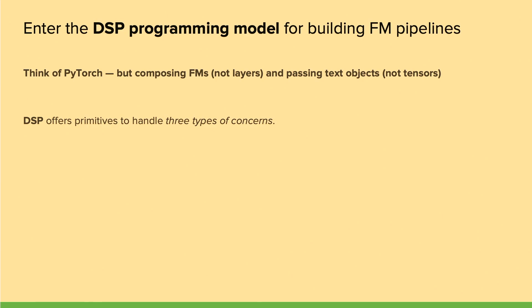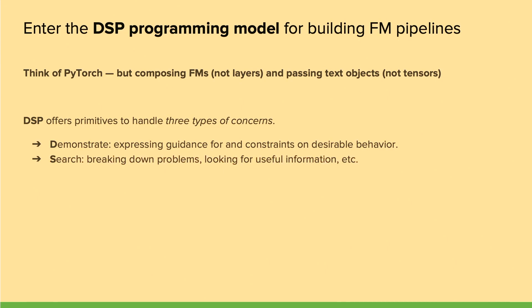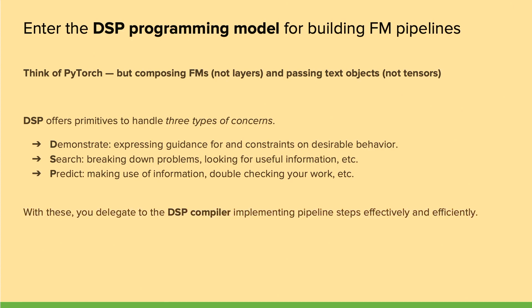DSP is built on three key primitives. The demonstrate primitive expresses how the pipeline should behave and what constraints to impose. The search primitive breaks problems down into more tractable sub-problems and looks for useful information in knowledge corpora. The predict primitive makes use of the information found and helps double-check work. Once we have these primitives, we can delegate to the DSP compiler to automatically improve our pipelines in an effective and efficient way.